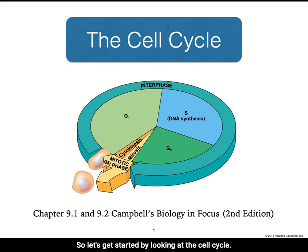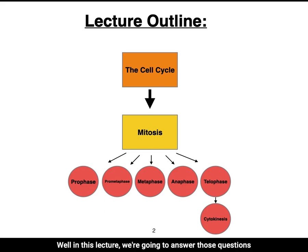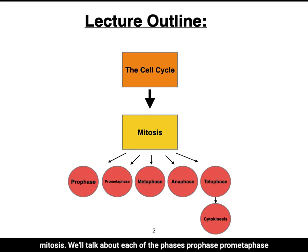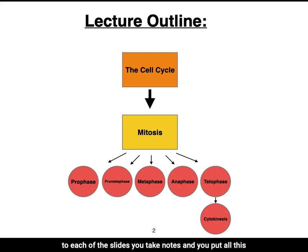Let's get started by looking at the cell cycle. Have you ever wondered how cells divide or how chromosomes are distributed in newly divided cells? In this lecture we're going to answer those questions. Specifically we're going to look at the cell cycle, which is the division of the cell, and mitosis, which is the division of genetic material. As we go through mitosis we'll talk about each of the phases: prophase, prometaphase, metaphase, anaphase, telophase, and cytokinesis.